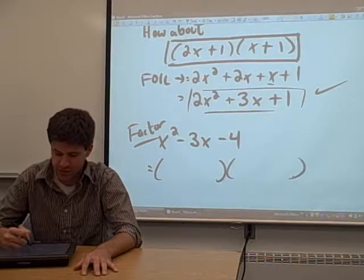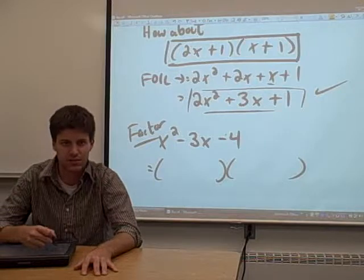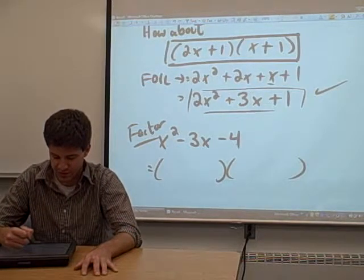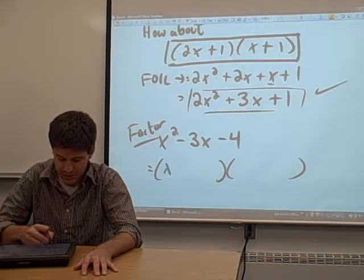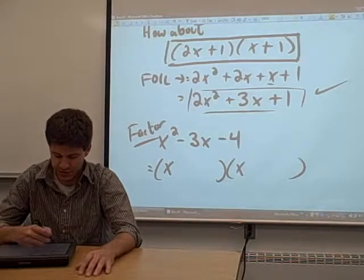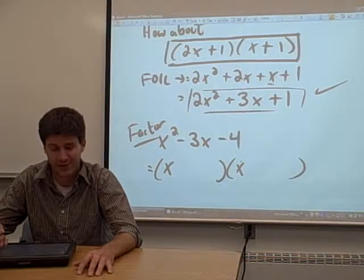You notice right off the bat, you can't pull anything out of each one of these three terms. We want our first term to be x squared. The only nice way to do this in our two binomials when we're foiling is to have an x here and an x here. That'll multiply to get x squared.